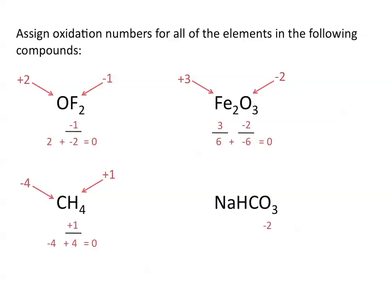Looking at our last example, first we assign the oxidation number to our most electronegative element first. This means oxygen has an oxidation state of negative 2, making the sum of the oxidation numbers on the 3 oxygen atoms minus 6. Remember that the elements in group 1 have an oxidation state of plus 1, equal to the charge of the ions these elements typically form. And hydrogen has an oxidation state of positive 1 when bonded with nonmetals. This means that the oxidation state for carbon must be positive 4 in order for the sum of all of the oxidation numbers in this neutral compound to equal 0.